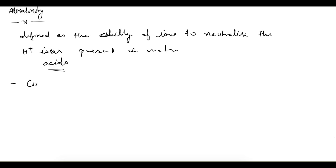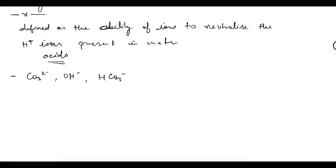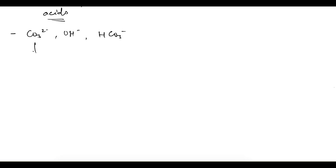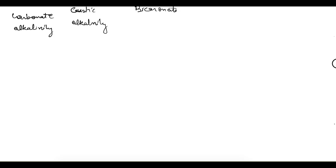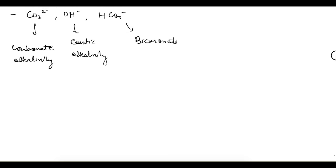The corresponding types of alkalinity are defined as follows: if it is due to the carbonate ion, we call it carbonate alkalinity; if it is due to the hydroxyl ion, it is called caustic alkalinity; and if it is due to the bicarbonate ion, it is called bicarbonate alkalinity.